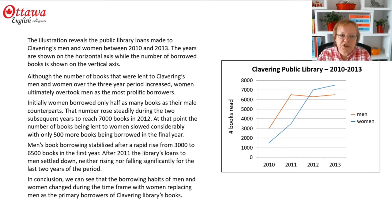So the presentation that I've prepared sounds a little like this. The illustration reveals the public library loans made to Clavering's men and women between 2010 and 2013. The years are shown on the horizontal axis while the number of borrowed books is shown on the vertical axis. Although the number of books lent to Clavering's men and women over the three-year period increased, women ultimately overtook men as the most prolific borrowers.